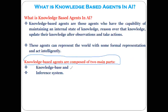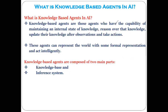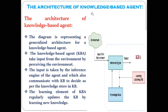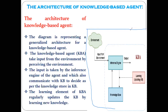An intelligent agent needs knowledge about the real world for taking decisions and reasoning. Knowledge-based agents are those agents who have the capability of maintaining the internal state of knowledge, having the capability of reasoning over that knowledge, having the capability of updating their knowledge after observation, and from that taking actions. These things are being done by the human being as well. Knowledge-based agents are composed of two important components: the knowledge base and the inference system.